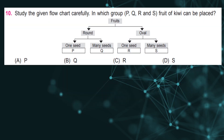Study the given flow chart carefully. In which group — P, Q, R, and S — can the fruit of kiwi be placed? Answer: D.S.